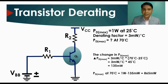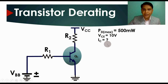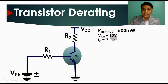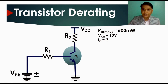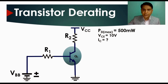Now let's look at another example. Here the power dissipation is 500 milliwatts and the collector-to-emitter voltage VCE is 10 volts. We need to calculate the maximum collector current that can flow through transistor Q1 given these parameters.